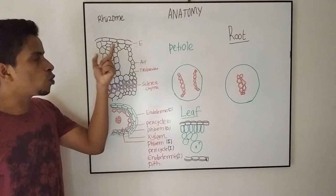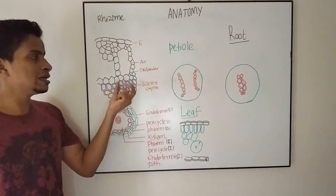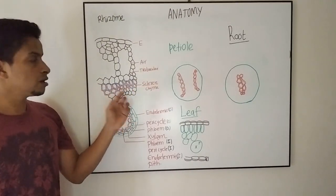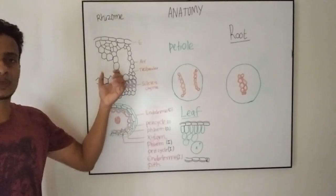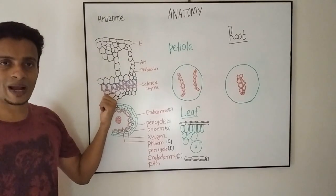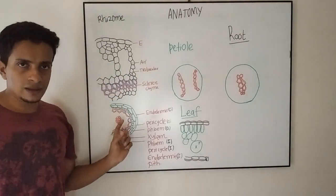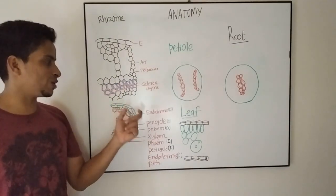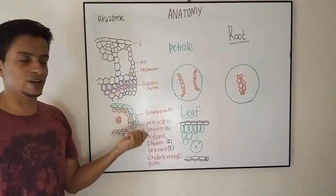Inner to the outer cortex is middle cortex, which is a few-layered sclerenchymatous zone. Inner to the sclerenchymatous zone is the inner cortex, which is compactly arranged parenchymatous tissue. Inner to the inner cortex, which is the innermost layer of cortex, is the endodermis.